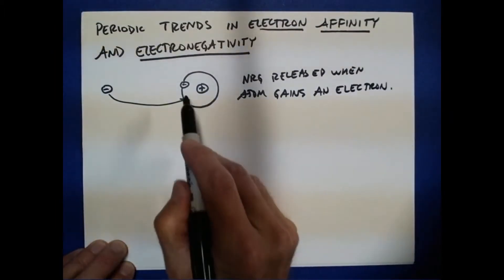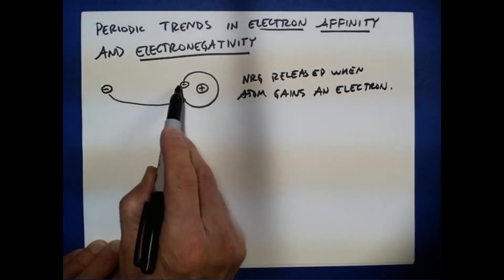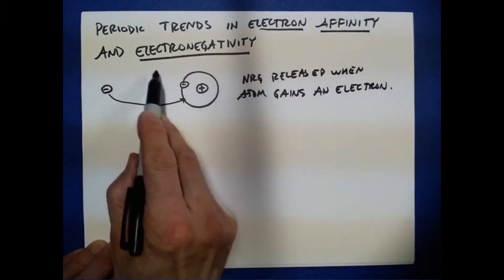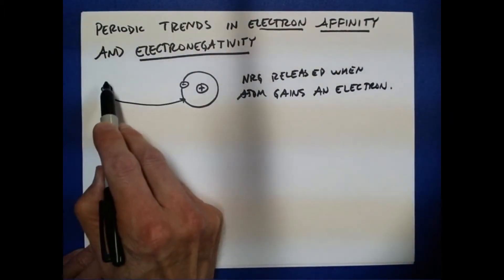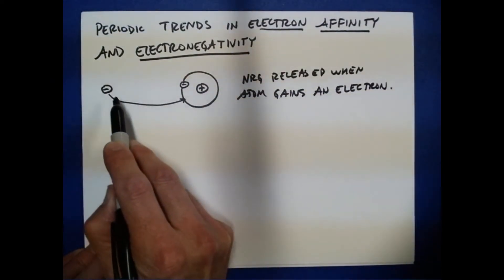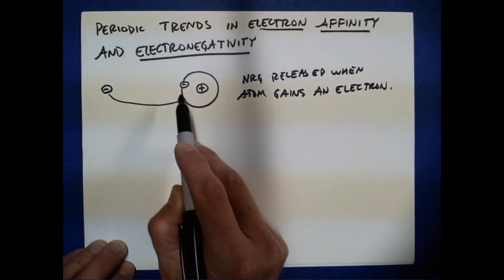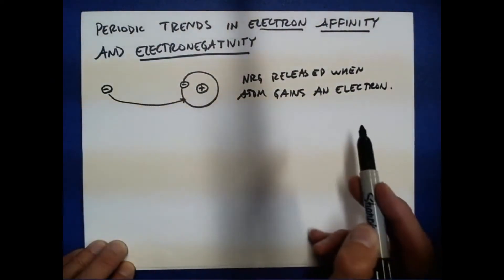Energy is released when an atom gains an electron. If you think of it in reverse, it takes energy to remove an electron from an atom. So dropping the electron onto the atom is going to release energy.